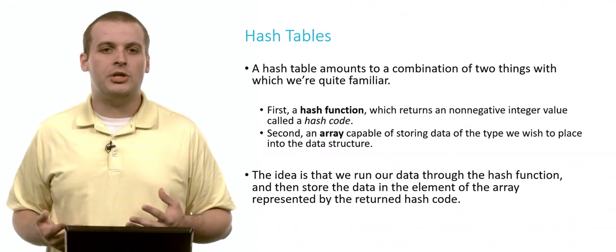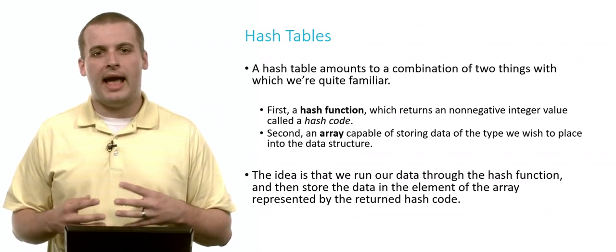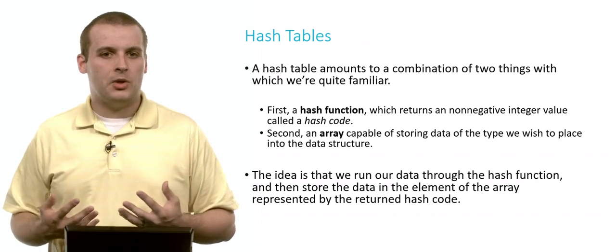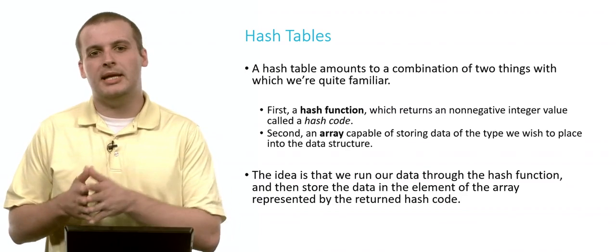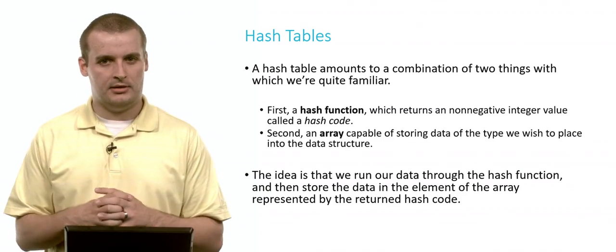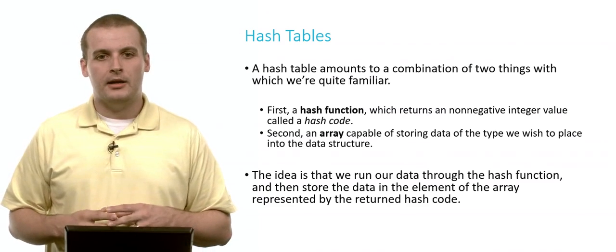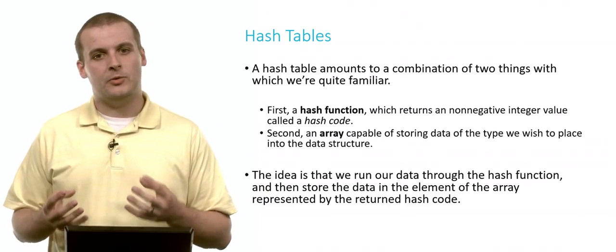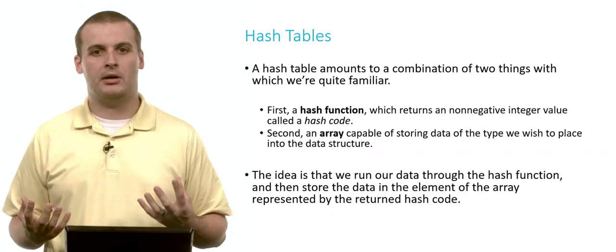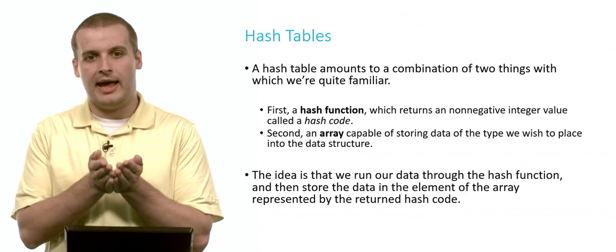A hash table is a combination of two distinct pieces. The first is a function, which we usually call a hash function, and that hash function is going to return some non-negative integer, which we usually call a hash code. The second piece is an array, which is capable of storing data of the type we want to place into the data structure. The basic idea is we take some data, we run that data through the hash function, and it spits out a number, and then with that number, we just store the data in the array at that location.